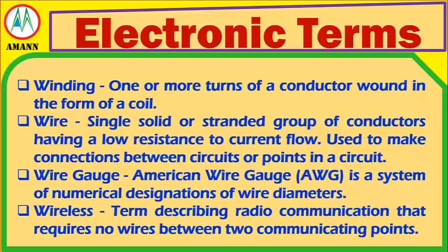Winding: One or more turns of a conductor wound in the form of a coil. Wire: A single solid or stranded group of conductors having low resistance to current flow, used to make connections between circuits or points in a circuit. Wire Gauge: The American Wire Gauge (AWG) is a system of numerical designations of wire diameters. Wireless: A term describing radio communication that requires no wires between two communicating points.